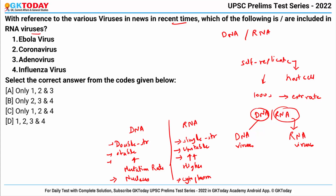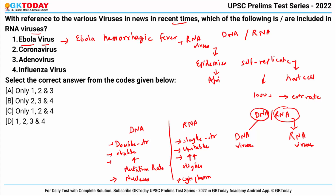These are the basic points to identify the differences between DNA and RNA viruses. Now looking at the options: first is Ebola virus, which is responsible for causing Ebola hemorrhagic fever and it is an RNA virus. It was responsible for a number of epidemics in Africa, such as in 2014 in West Africa. So this is an RNA virus.